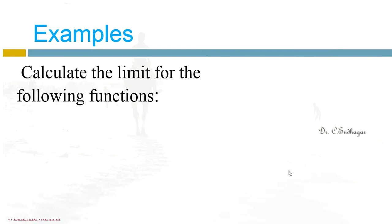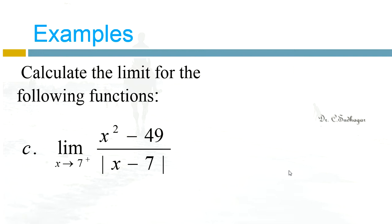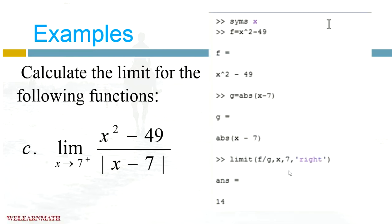Let us take the third example. Now we are taking the right limit, that is plus. The command is this. Just to have a difference we are using this SYMS. Otherwise in this place, limit, we can totally give this function here, comma x comma 7 comma, for this plus you can give right. So we will get this output.